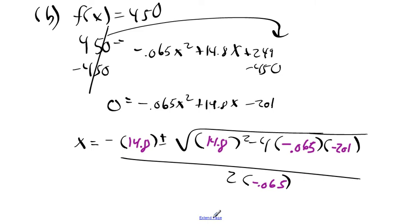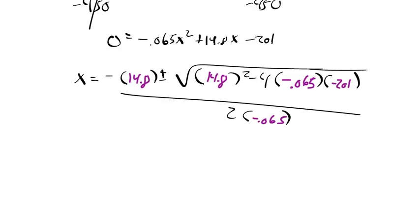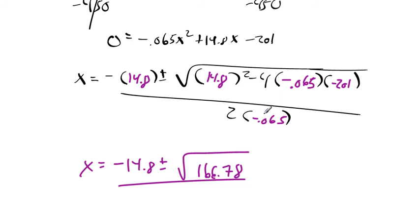Nice little crunchy numbers there. So we get x = -14.8 ± √[14.8² - 4(-0.065)(-201)] all over 2(-0.065). When you multiply all that out, 14.8² minus 4 times -0.065 times -201, you get 166.78. And 2 times -0.065 is -0.13.